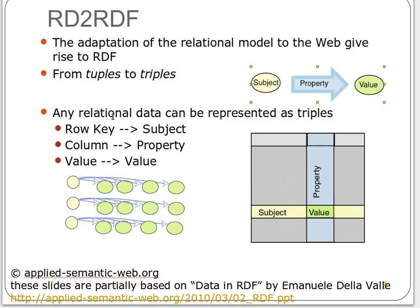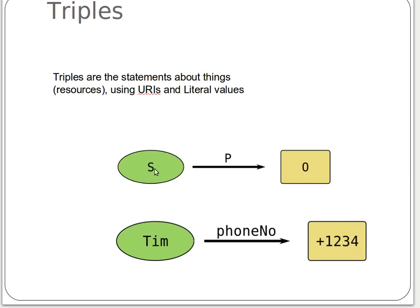Remember that any relational data can be represented as triples — subject, properties, and values for the row, column, and value respectively, as you can see from the figure here. Now, we have a triple and we have subject, property, value. For example: Tim has a property called phone number, and the value of that phone number is a given number. Formally, this is called subject, predicate, and object — or subject, property, value. The subject and predicate are usually URIs, while the value can be a literal. Please remember: subject and predicate can be URIs, as they are part of the resource we are trying to describe.